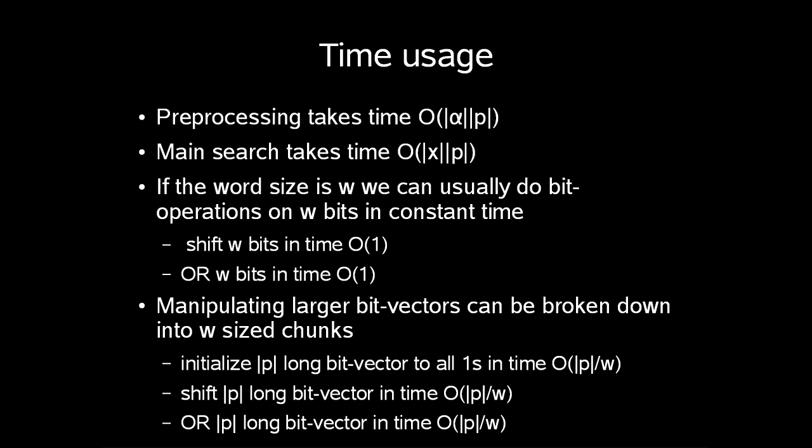Preprocessing takes time O(|alphabet| × |p|). And main search takes time O(|x| × |p|).